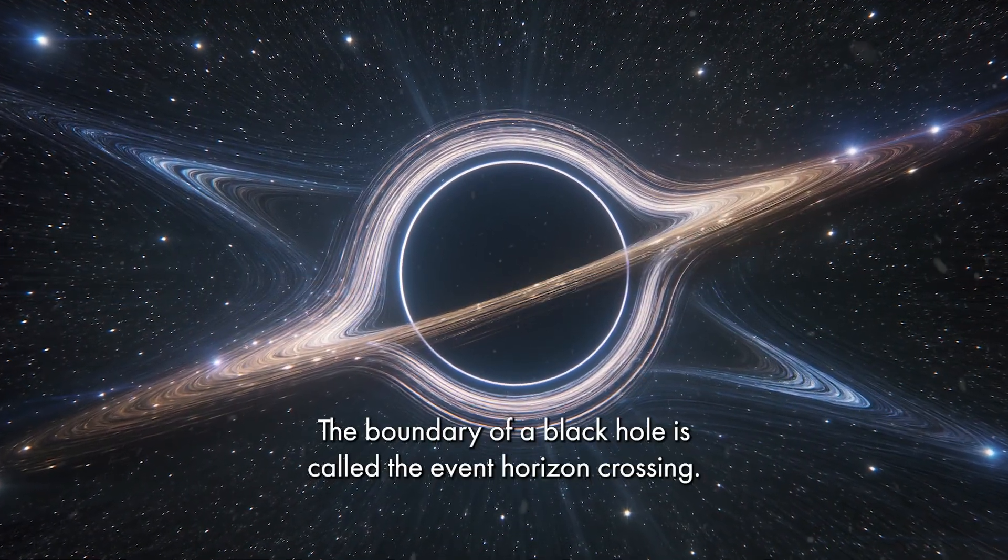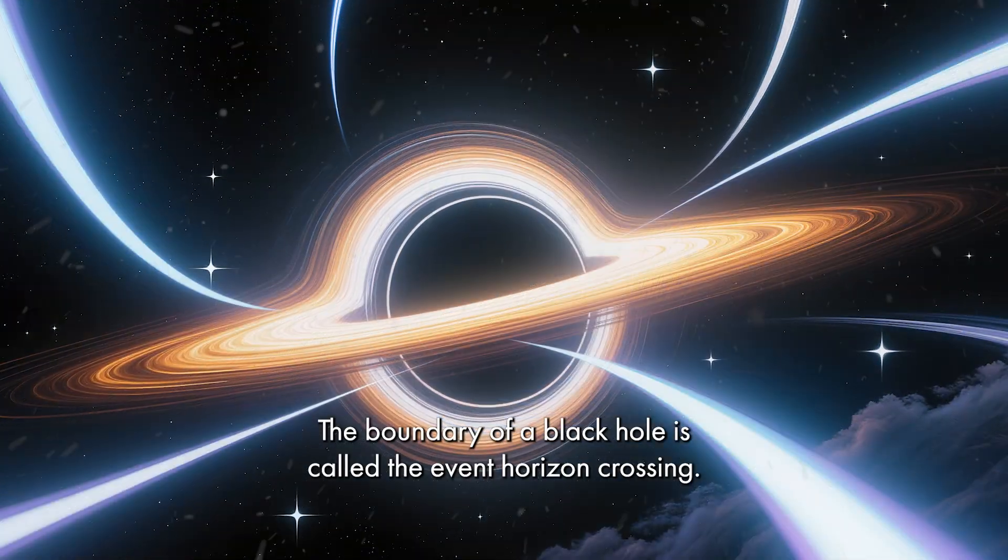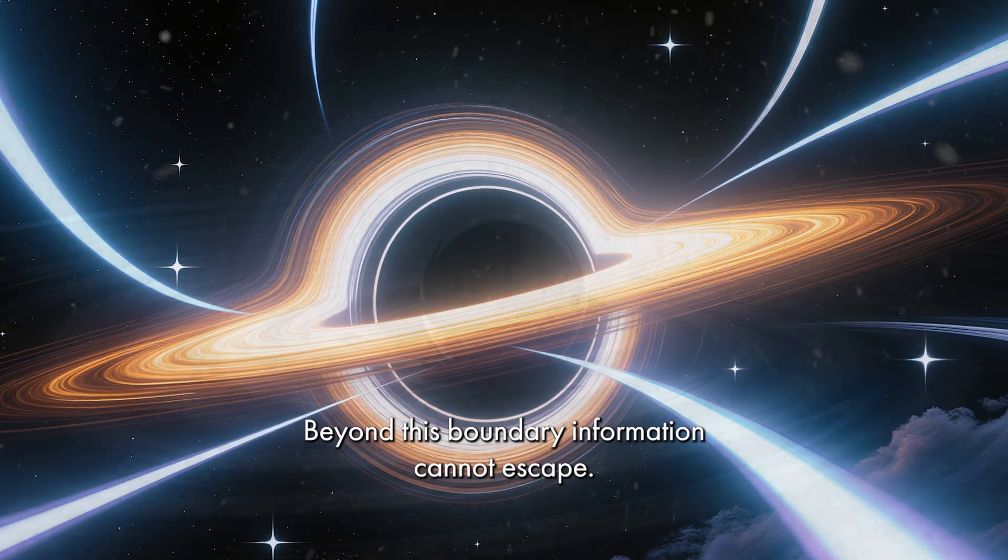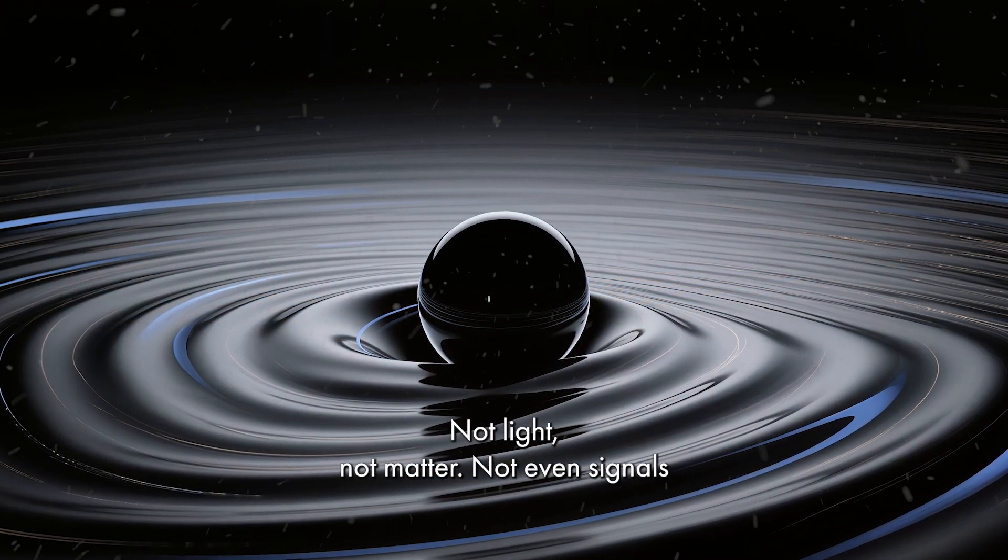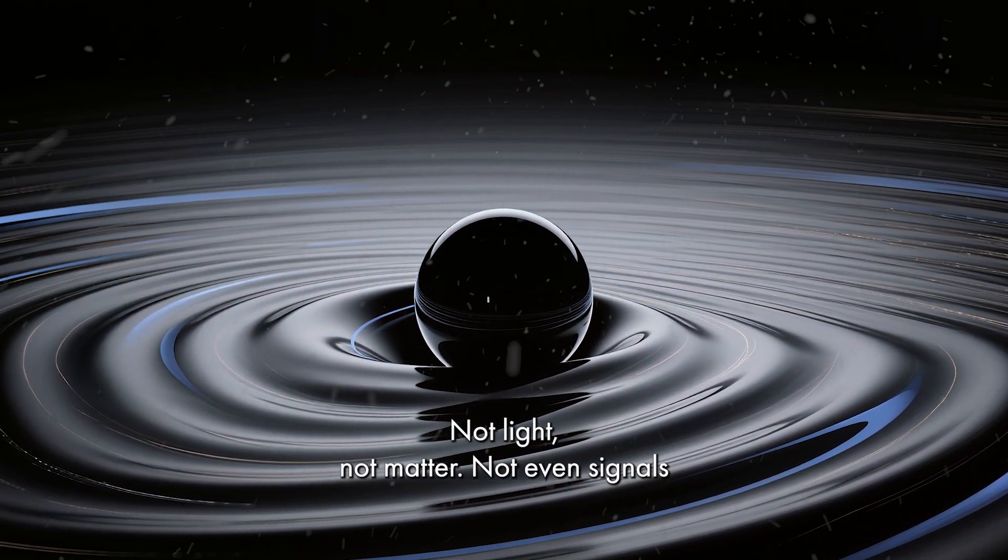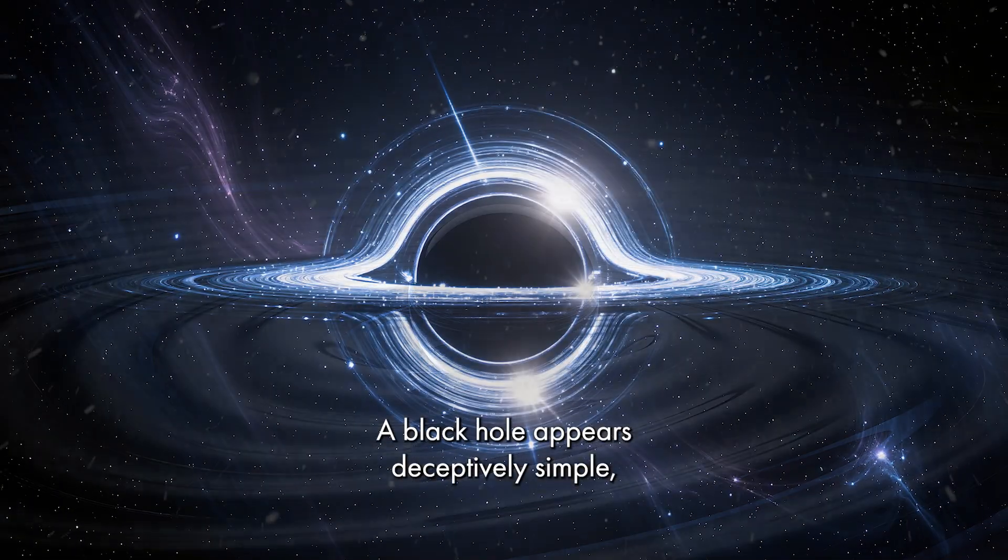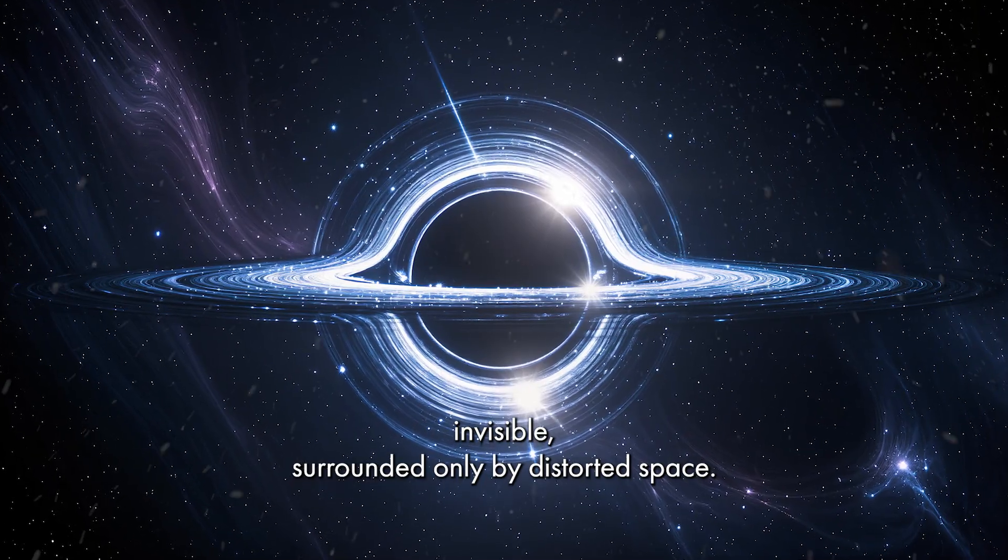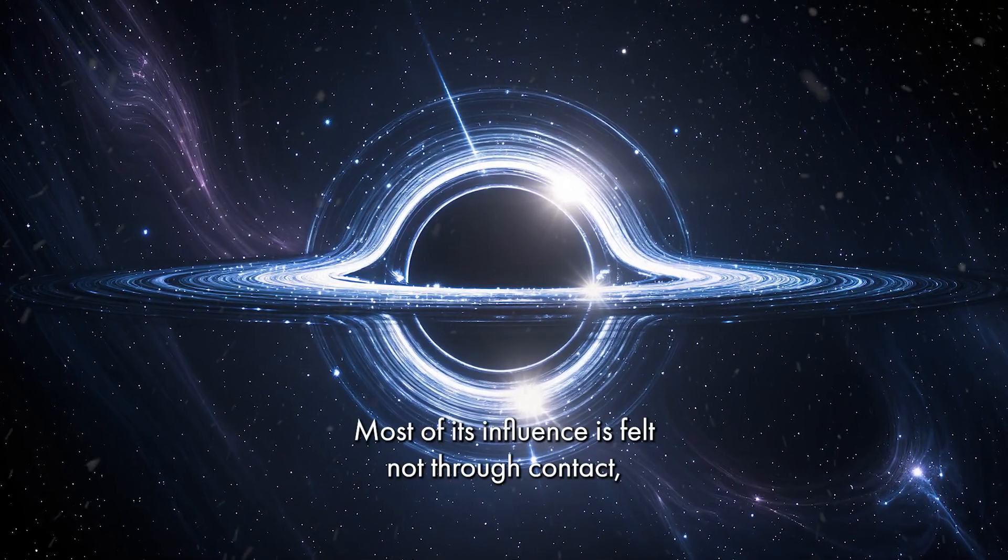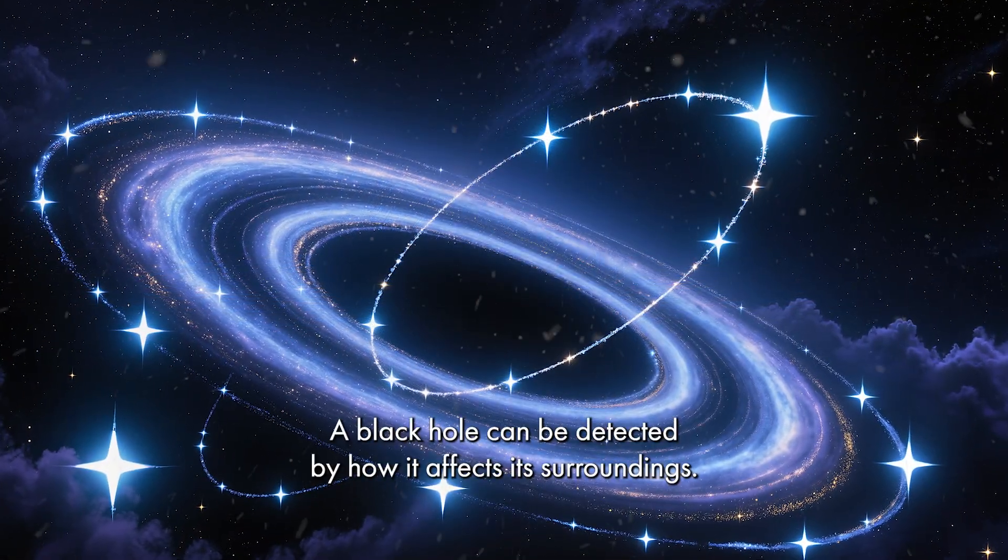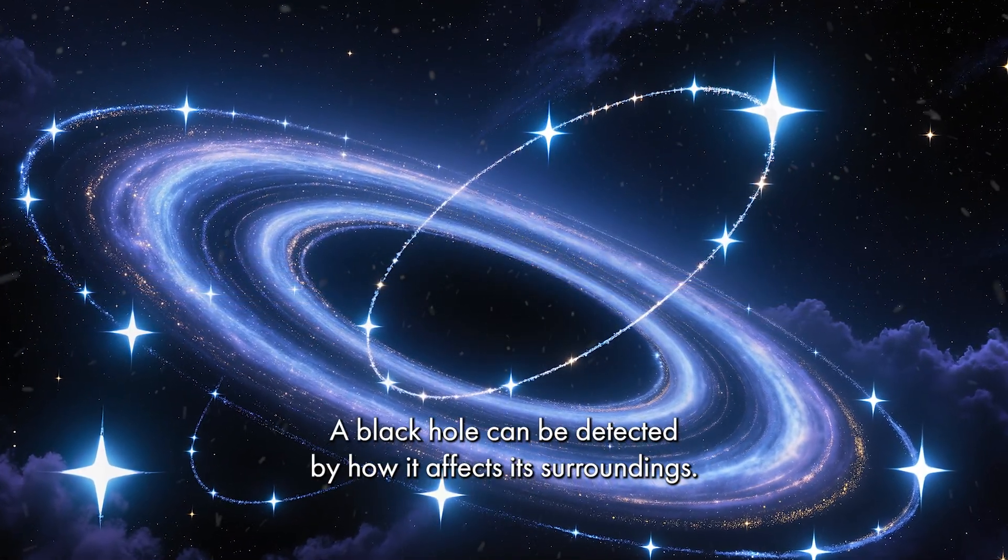The boundary of a black hole is called the event horizon. Crossing it marks the point of no return. Beyond this boundary, information cannot escape. Not light, not matter, not even signals. From the outside, a black hole appears deceptively simple, invisible surrounded only by distorted space. Most of its influence is felt not through contact, but through gravity. A black hole can be detected by how it affects its surroundings.